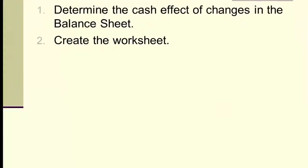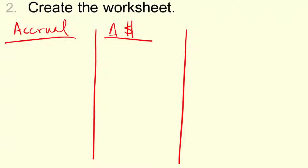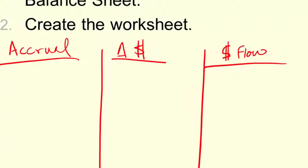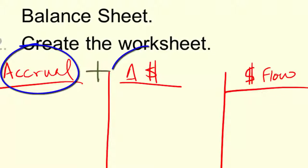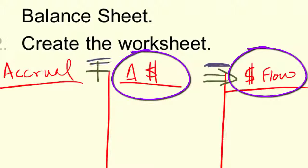Step two is to set up our worksheet. We're going to start with our accrual information on the left, then put our change in cash here in the middle, and finally put the cash flow information on the right. You can set this up any way you want, but I recommend you always use this setup, because then it's easy in one look to identify the equation you need — and the equation changes. If I know my accrual information, I take the accrual plus the change in cash to get to my cash flow. If I know cash flow, I subtract — I take the cash flow number minus the change to get back to my accruals.